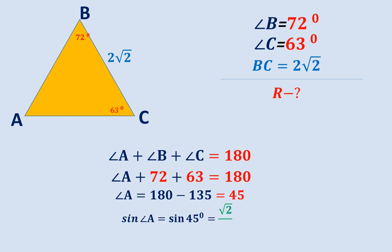We can calculate the sine of an angle of 45 degrees. Sine of A is equal to square root of 2 divided by 2.